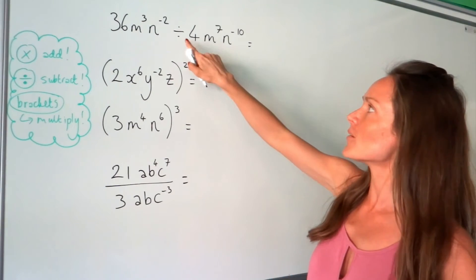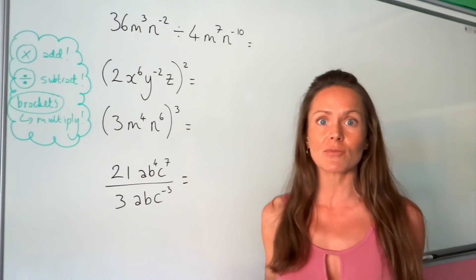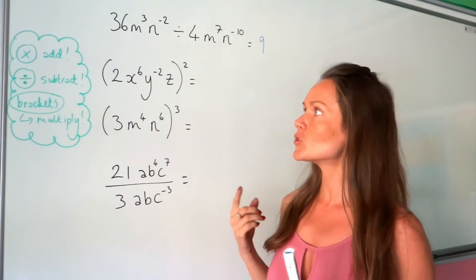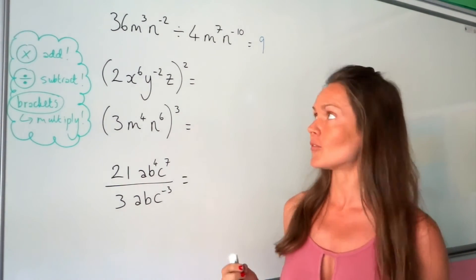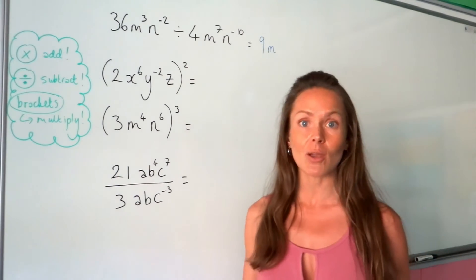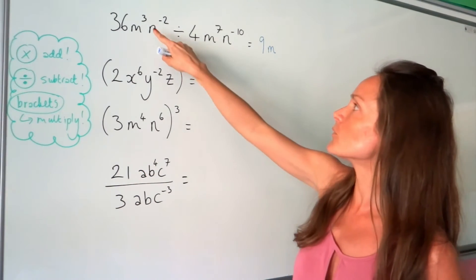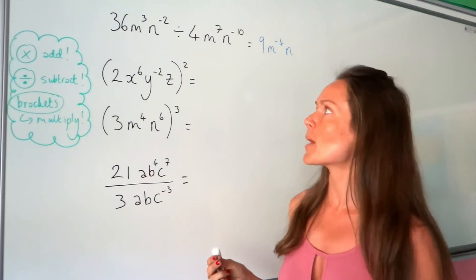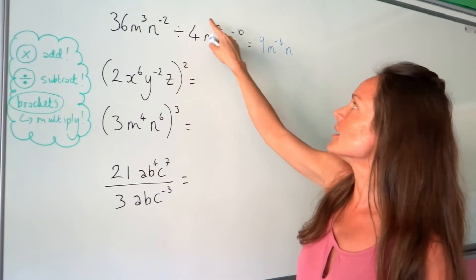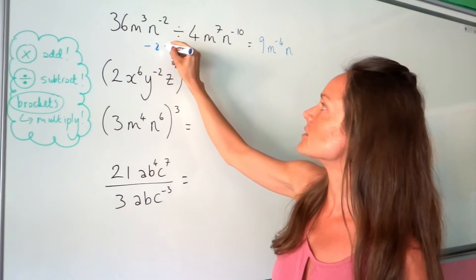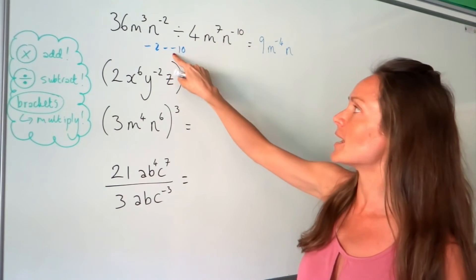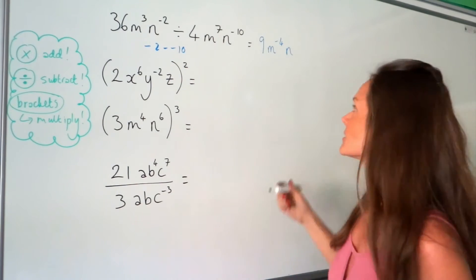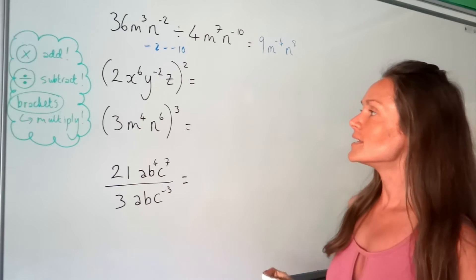Now I'm making them a bit harder. In this top one I'm dividing — for normal numbers you just divide them as normal, so 36 divided by four is nine. For the m values, remember for divide you subtract the powers, so three take away seven is negative four. For the n values, minus two take away negative ten — be careful, that's a double minus which turns into a plus — so negative two plus ten is equal to eight.